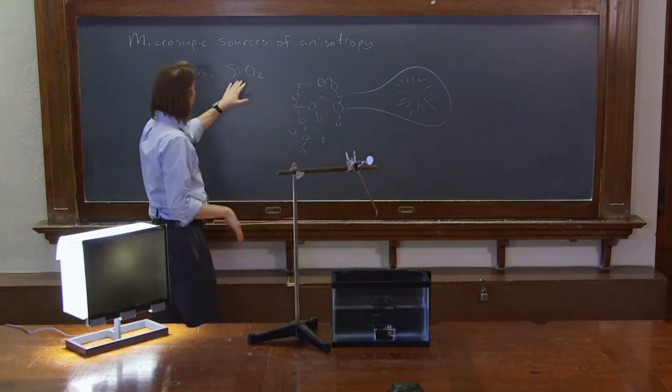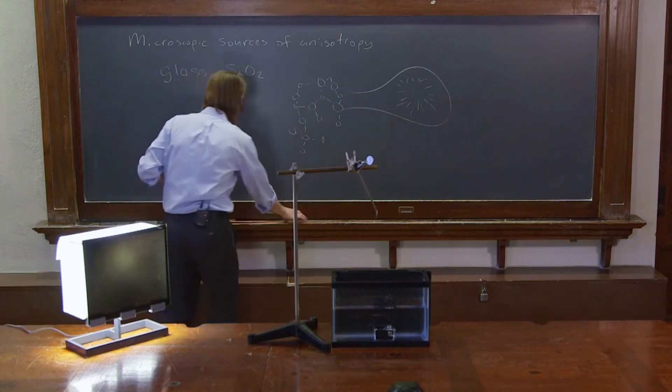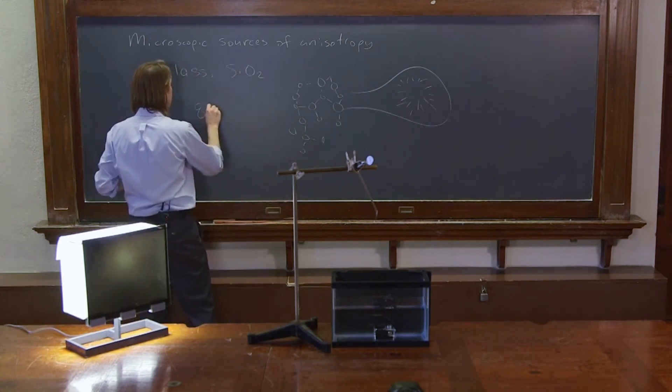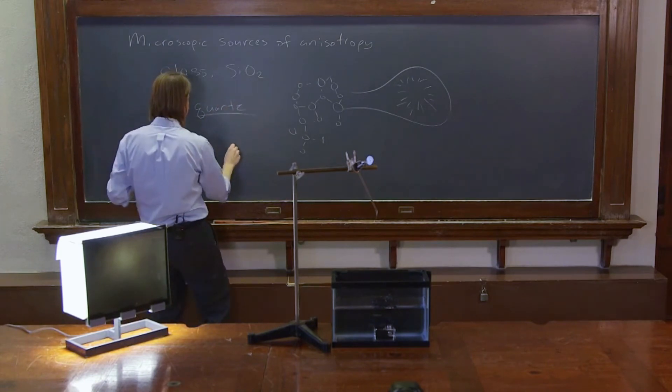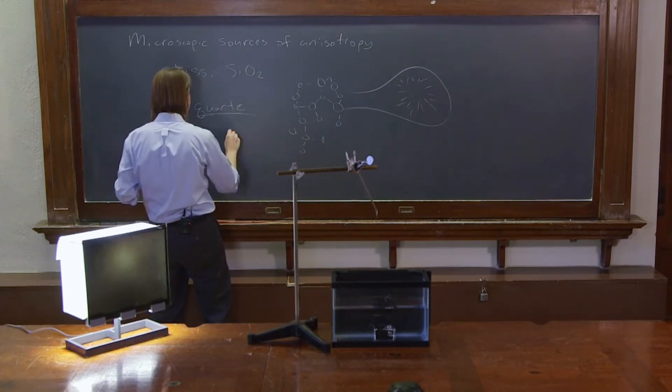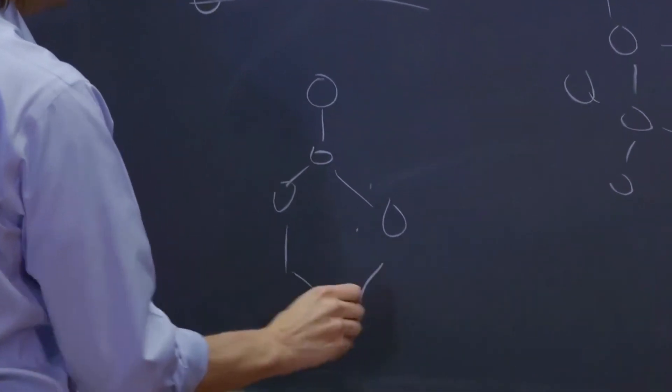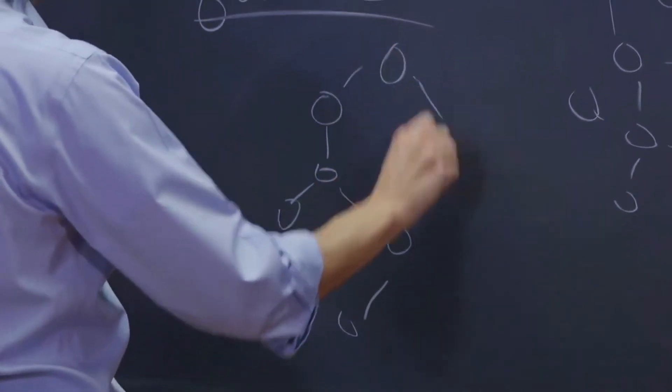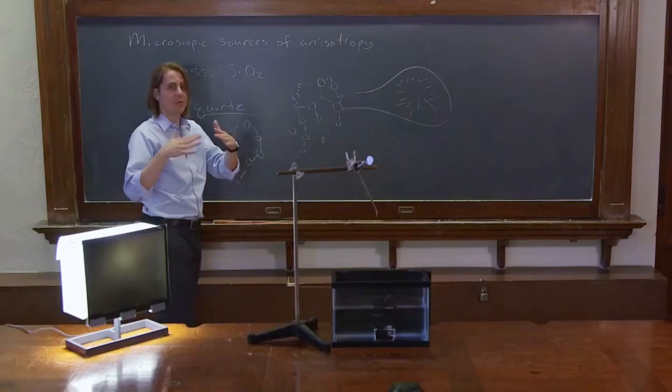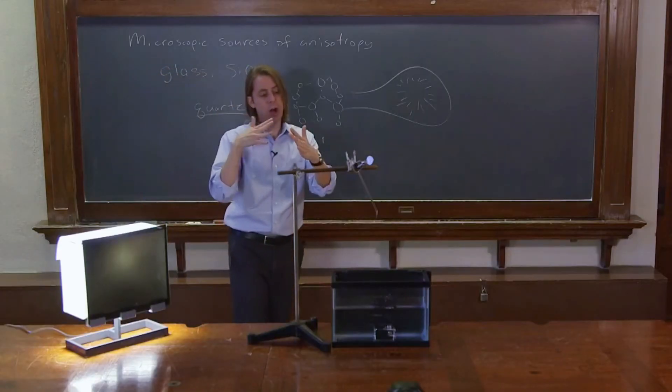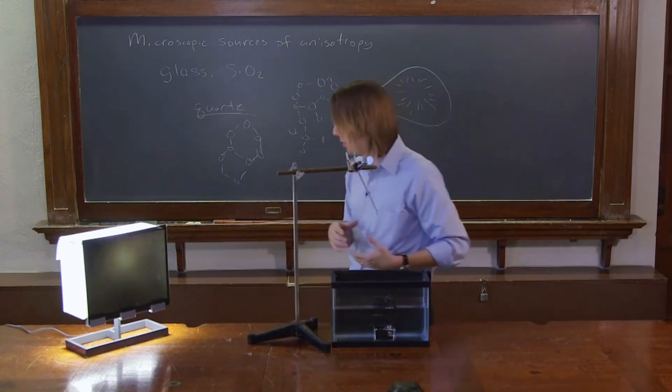Another way is to have SiO2, but quartz, right? Not amorphous glass, but if we have quartz, that should be the crystalline form. So if you have a silicon there, then you have your three oxygens, and then you have another one, and it makes sort of a hexagonal lattice like this, and it's a crystal. And when you have a crystal, you can certainly imagine that if you look optically at different planes, you're going to have different abilities to shove electrons around, and you should have anisotropy.